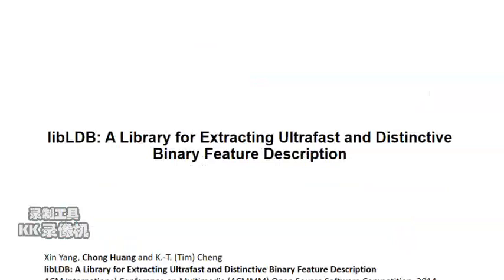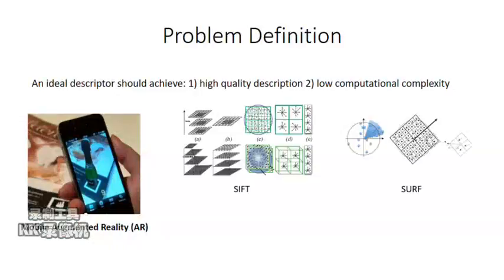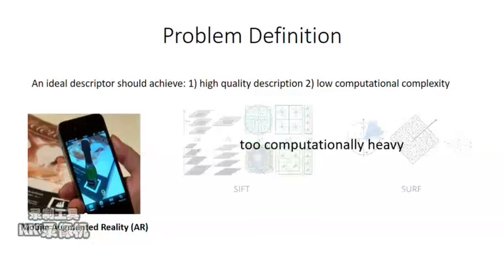The first work is about lightweight binary feature for vision apps on mobile device. The vision apps on mobile device, such as AR, demand highly efficient feature extraction. SIFT and SURF descriptors are most widely used in computer vision. It requires computation of gradients for every image pixel within an image patch, which is usually too computationally heavy for low-power mobile devices.